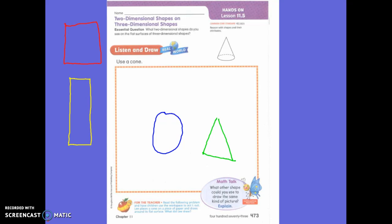So Lee places a cone on a piece of paper and draws around its flat surface. So which part is the flat surface of a cone? Point to the flat surface of the cone. Would you guys agree? He points to this right here. Yes. Okay, he is right. This is the flat surface of the cone.